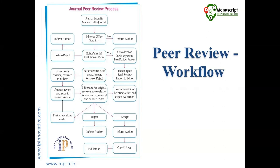If the paper is accepted by the editor, it proceeds to the production stage, where it undergoes copy editing, proofreading, and all formatting as per the journal style. After completion of all these steps, the paper is published.